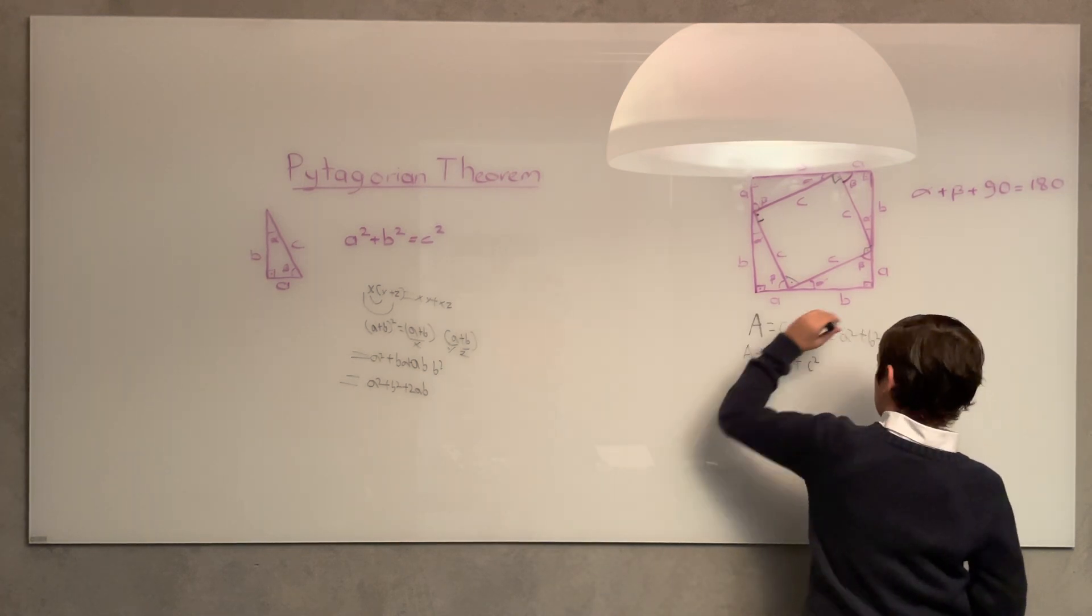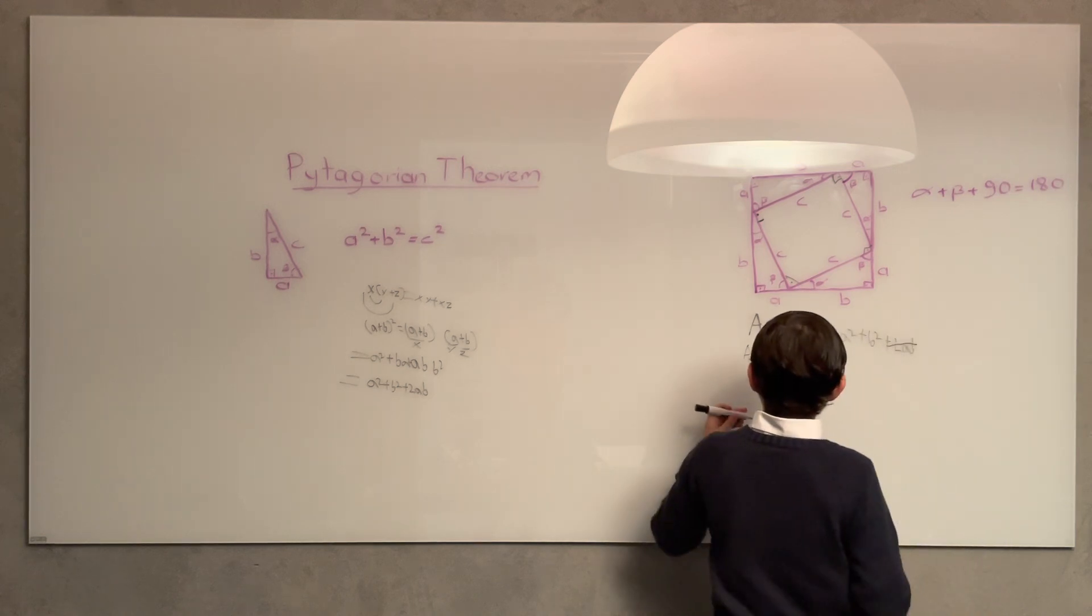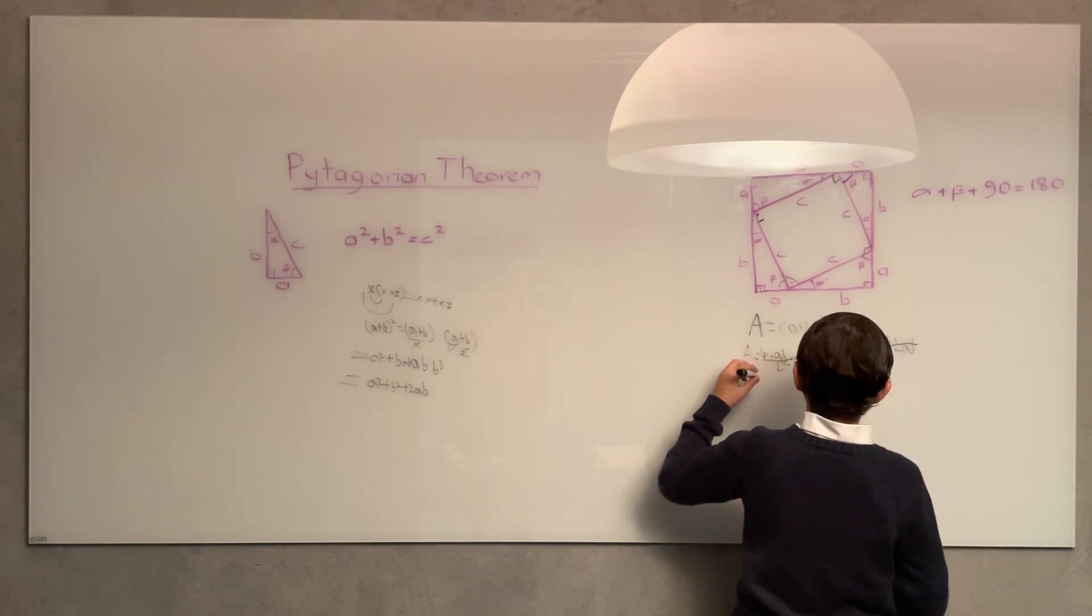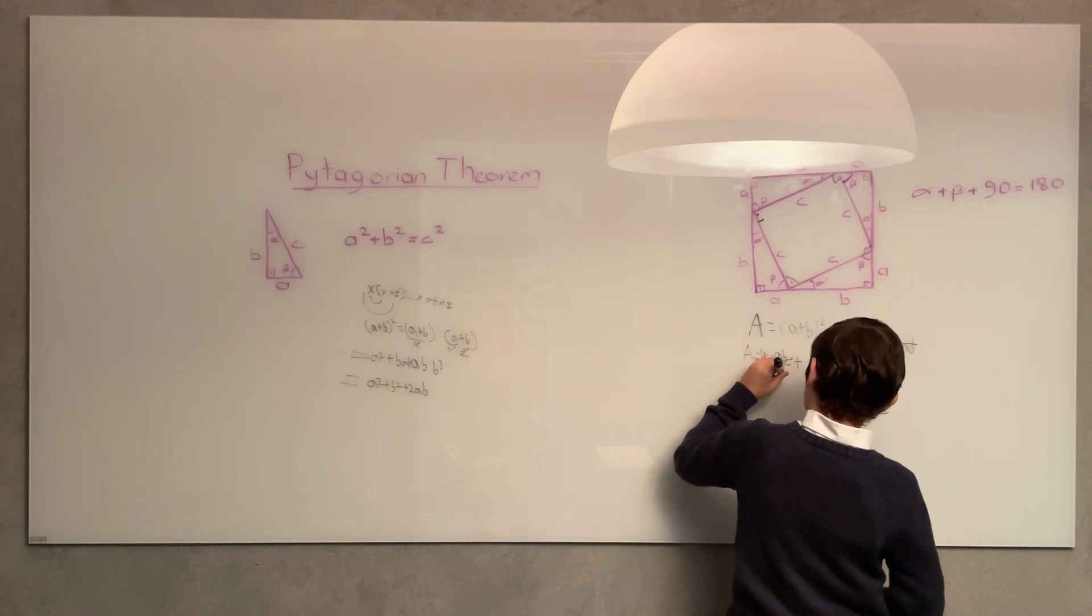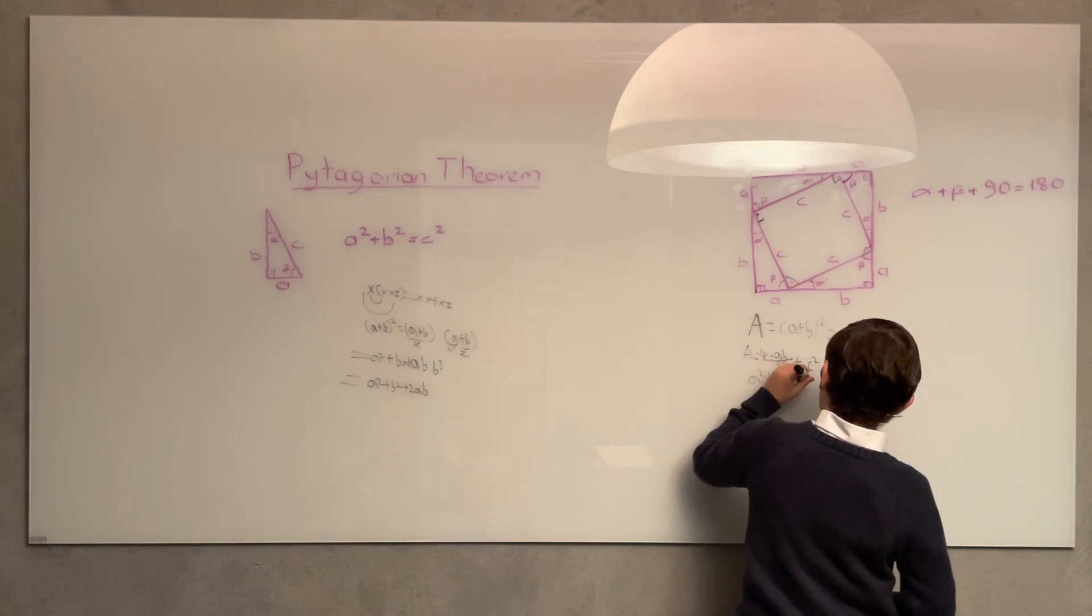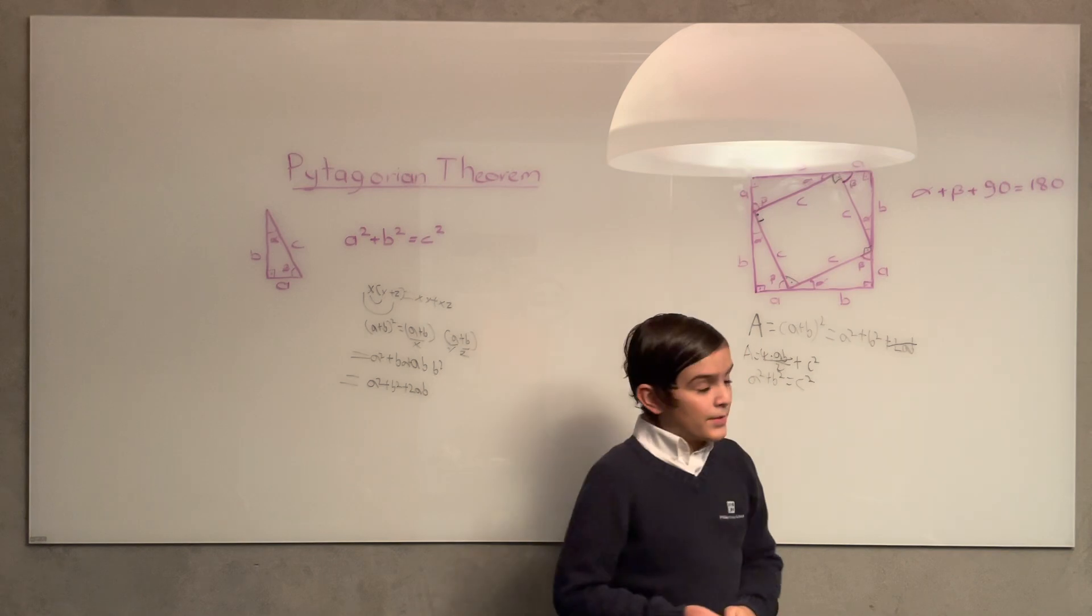So, we can cancel the 2ab from both expressions. And now, what we have left is a² + b² = c². And that's how you prove the Pythagorean theorem.